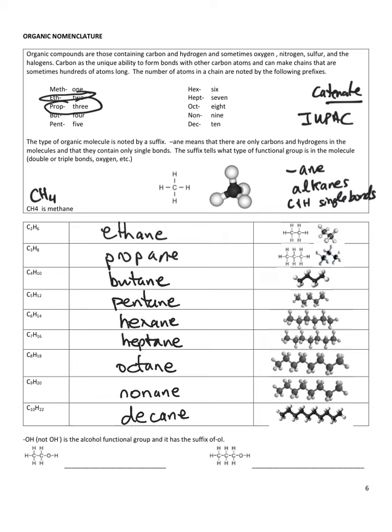Ten is decane. With ten carbon atoms, the only other atoms in the molecule are hydrogens, and they're all single bonded. These are the alkanes.